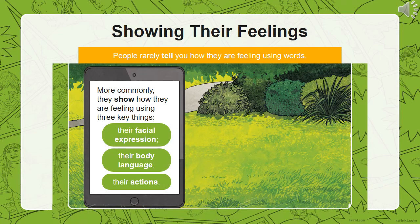People rarely tell you how they are feeling using words. More commonly, they show how they are feeling using three key things: their facial expression, their body language, and their actions.